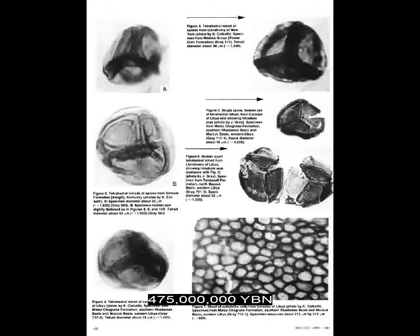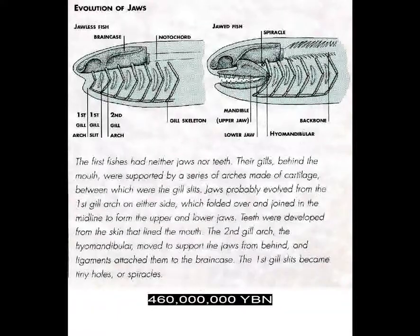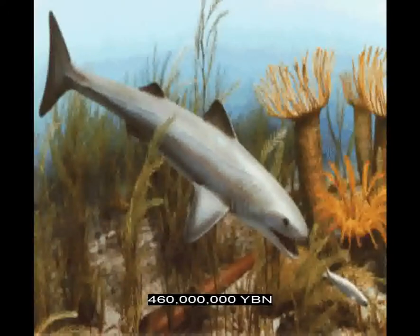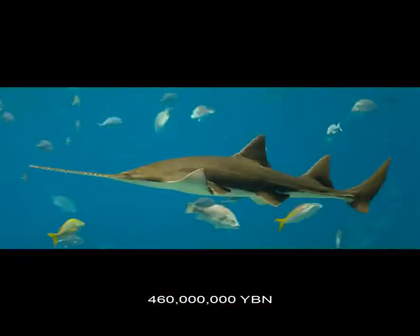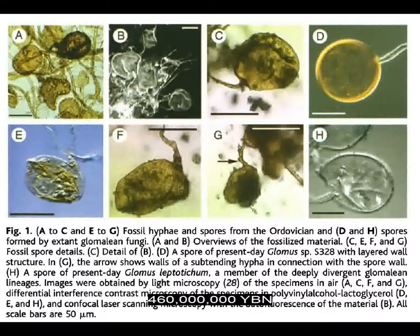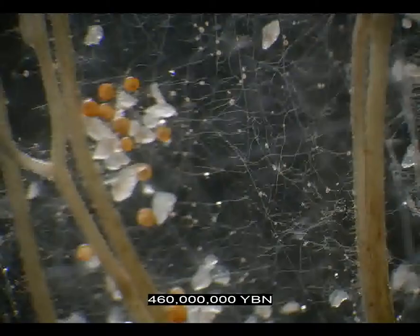Plants live on land. The first animals live on land — arthropods Myriapoda: centipedes and millipedes. Jawed vertebrates evolve — Gnathostomata. First vertebrate teeth. Jawed fishes, cartilaginous fishes — ancestor of all sharks, rays, skates, and sawfishes. Earliest fungi on land — ancestor of all terrestrial fungi. Fungi Glomeromycota.